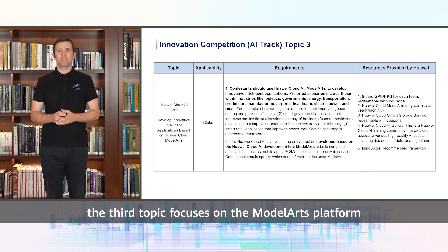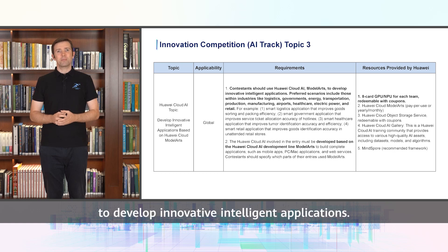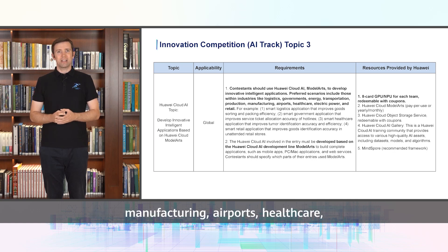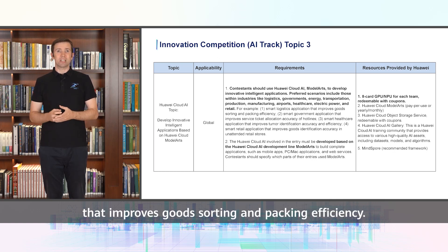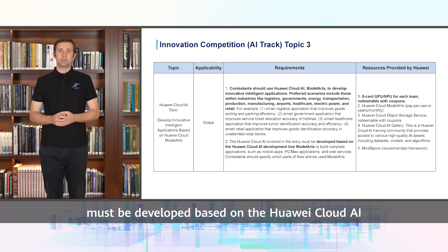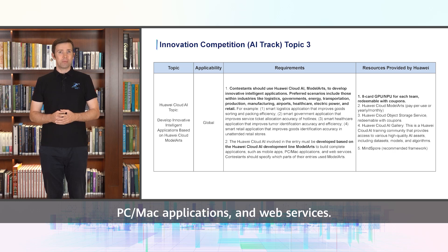The third topic focuses on the Model Arts platform of Huawei Cloud AI. For this topic, you should use Huawei Cloud AI Model Arts to develop innovative, intelligent applications. Preferred scenarios include those within industries like logistics, governments, energy, transportation, production, manufacturing, airports, healthcare, electric power, and retail. One example is a smart logistics application that improves goods sorting and packing efficiency. You should also be aware that Huawei Cloud AI involved in the entry must be developed based on the Huawei Cloud AI development line, Model Arts. You need to build complete applications such as mobile apps, PC or Mac applications, and web services, and you need to specify which part of your entry has used Model Arts.